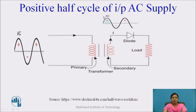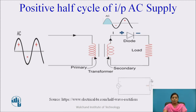During the positive half cycle of the AC supply, positive voltage is applied to the anode of the diode and negative voltage is applied to the cathode. In this condition, the diode becomes forward biased. In forward bias, the diode acts as a closed switch. Current flows through the load, and the output is equivalent to the input AC supply.